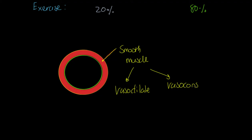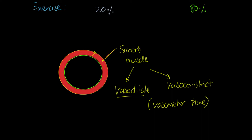That smooth muscle has a capacity to vasodilate and a capacity to vasoconstrict. The level of constriction or dilation - how tight the muscle is - this is what we refer to as vasomotor tone. When the smooth muscle vasodilates, it relaxes and moves outwards. That means the lumen becomes wider, which has a lower resistance to blood flow, and blood will flow through that passageway with a higher tendency to do so.